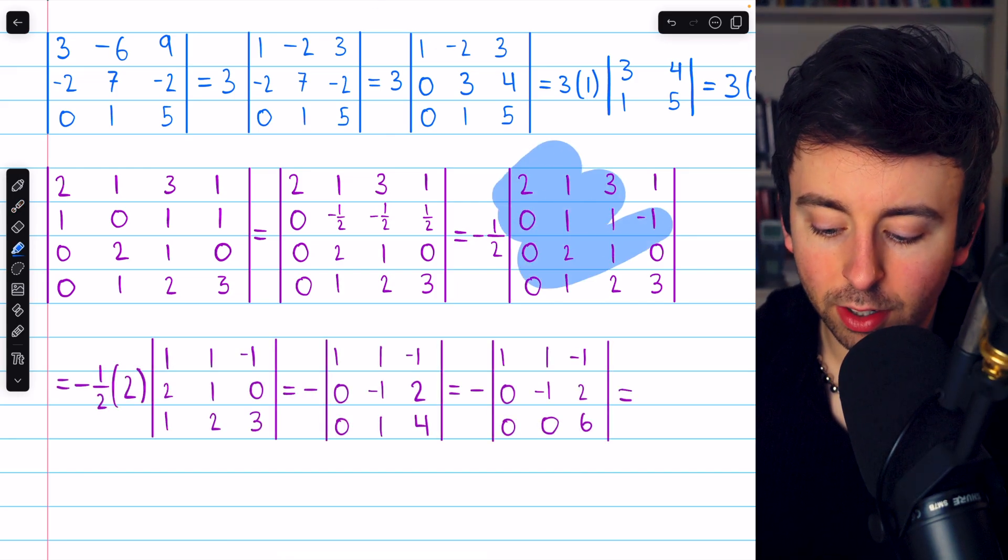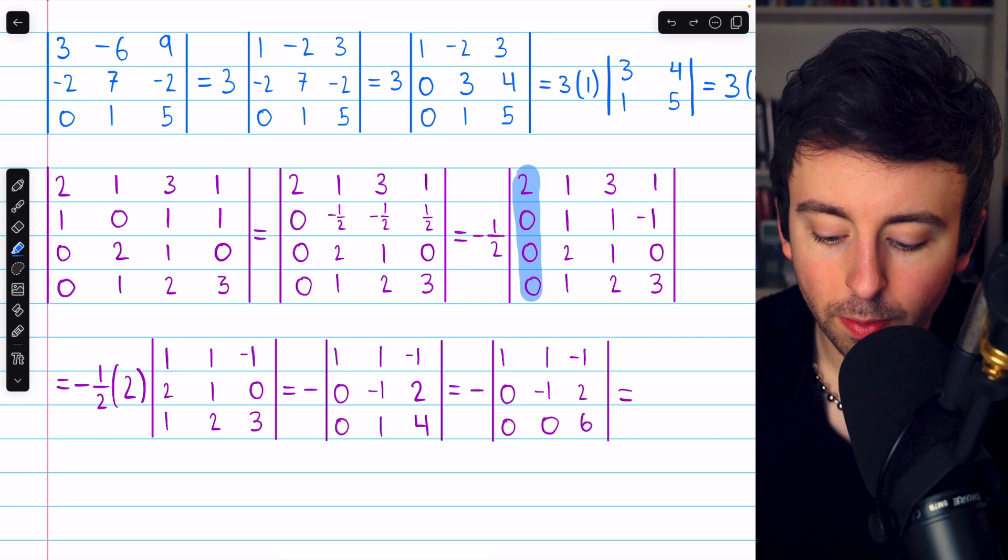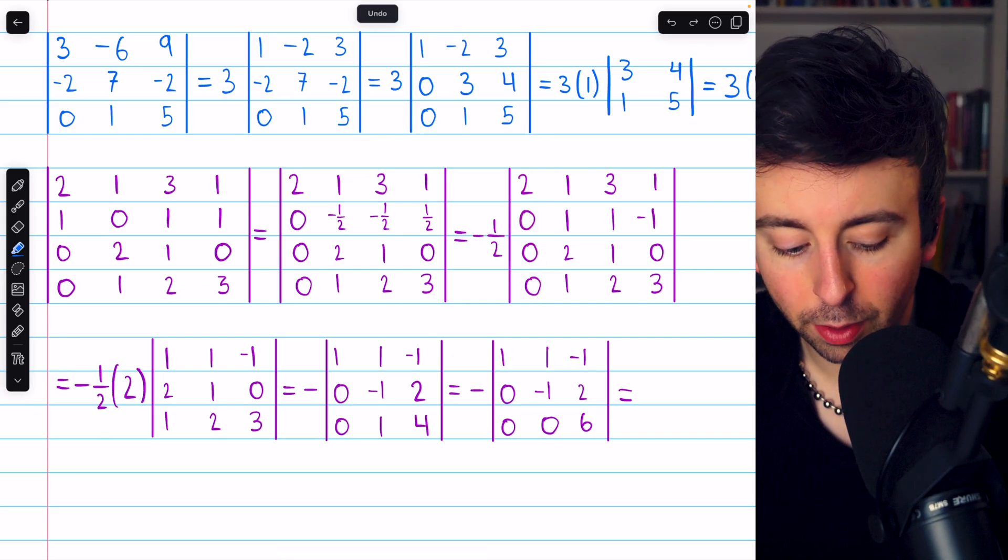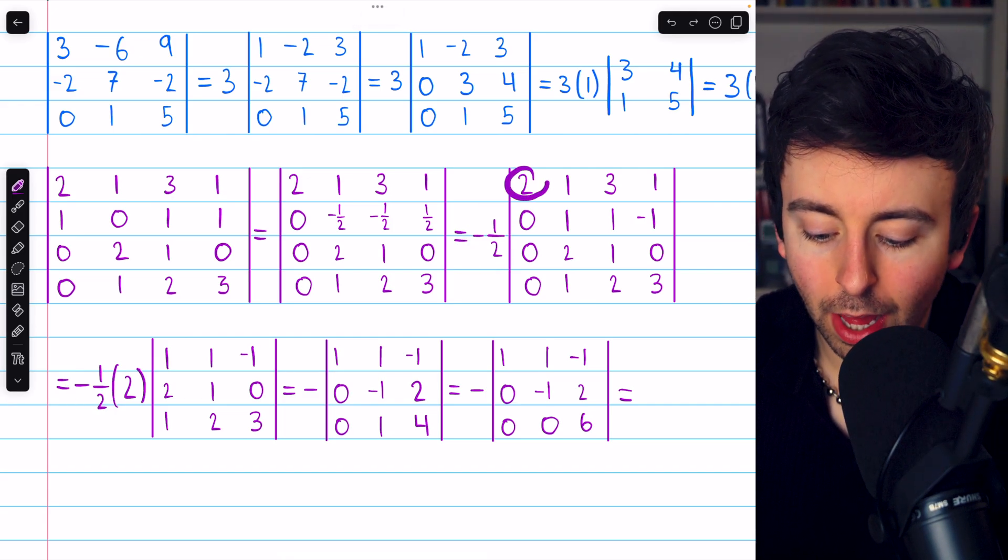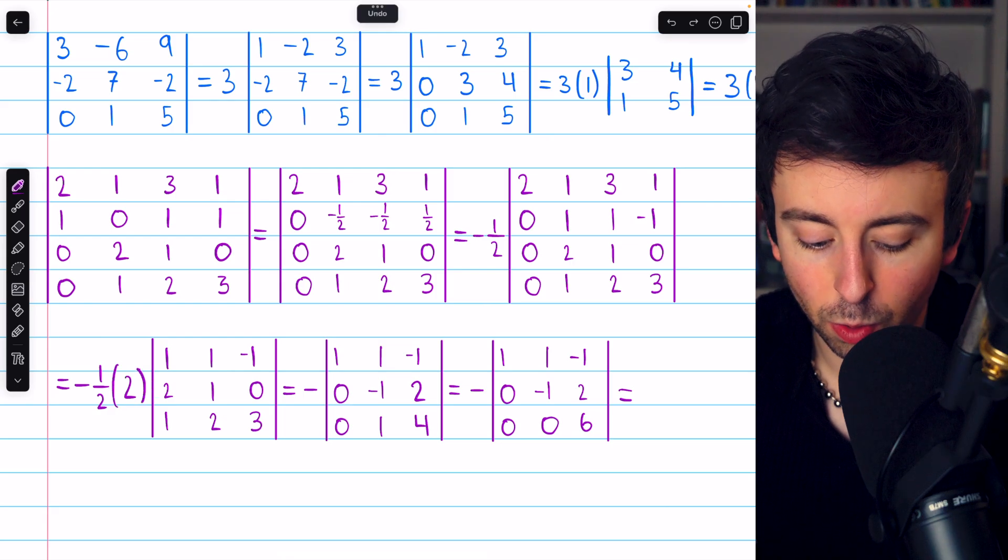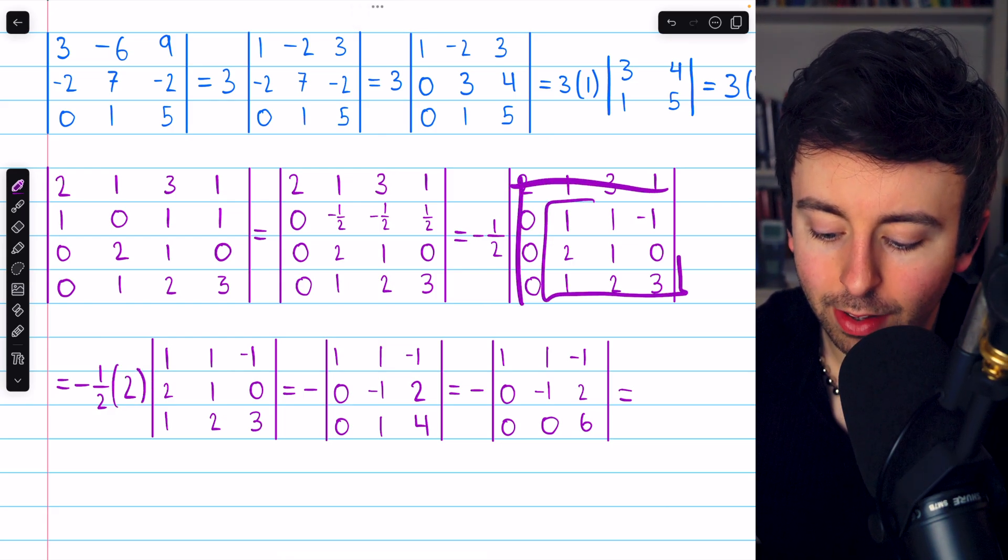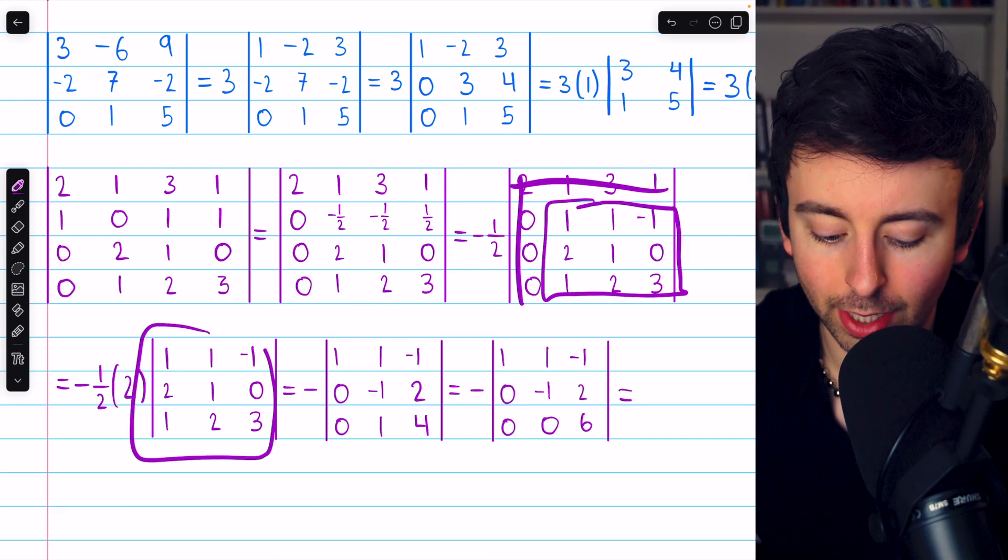Now we can find this determinant using a cofactor expansion along the first column. That's a good choice, because the first column is all zeros except for the first entry. So that's going to give us negative one half out front still, multiplied by this first entry, two, multiplied by the determinant of the submatrix that remains when two's row and column are deleted. So that's the determinant here.